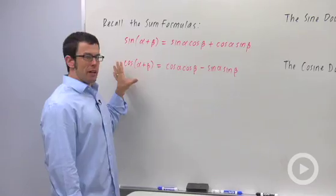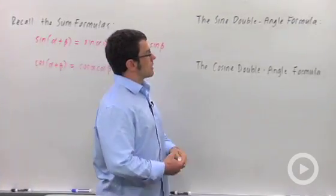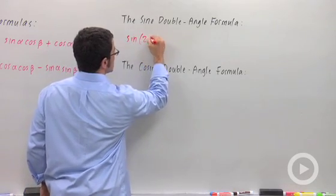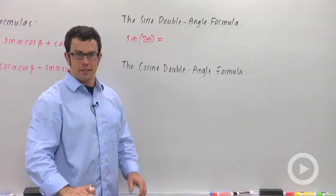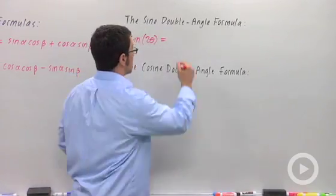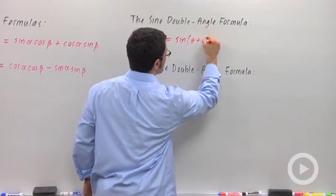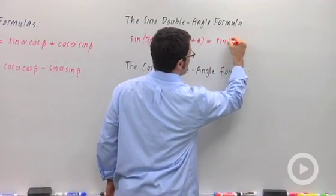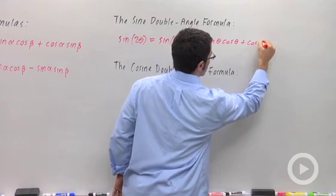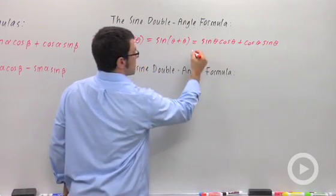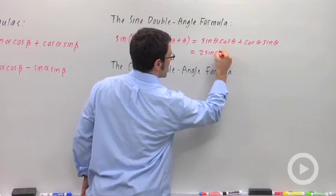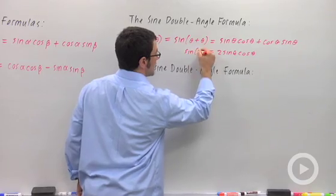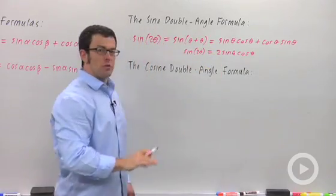Let's use these two identities to derive the double angle formulas. First for sine. Sine of 2 theta is the same as sine of theta plus theta. So we just apply the sine of a sum identity here. We get sine cosine plus cosine sine, but that's just 2 sine theta cosine theta. And that's our double angle identity for sine: sine of 2 theta equals 2 sine theta cosine theta.